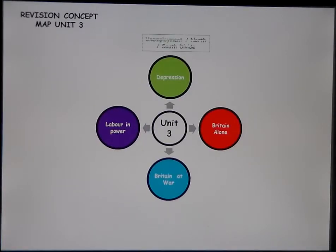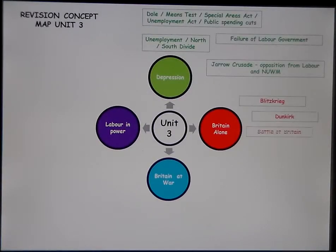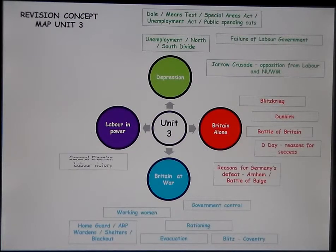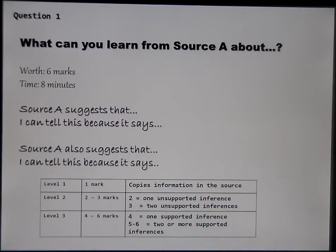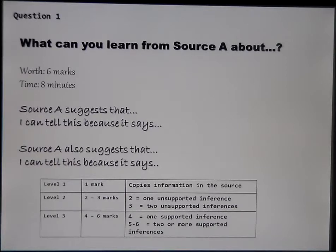So those are the four key topics — just the key ideas you should be aware of. Remember, your exam will focus on just one of these issues. Now, question types. The first question will be: 'What can you learn from Source A about...?' This is an inference question. You must start with 'Source A suggests that...', then 'I can tell this because it says...' and provide a supporting quote. You need to do this twice for full marks. Remember, you cannot use the wording from the source to make your inference.